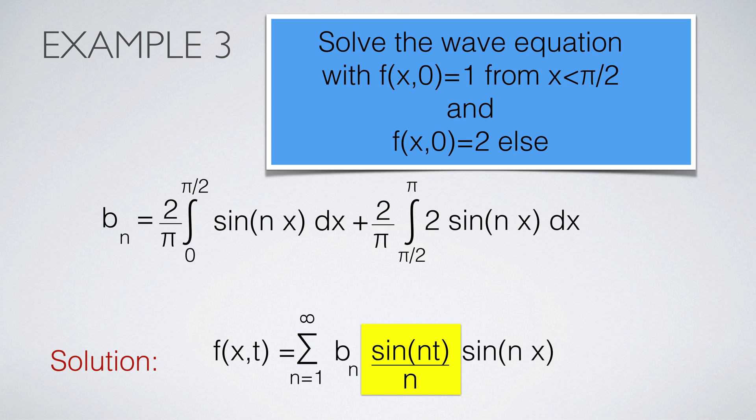In example 3, we give the initial velocity. We again have to build the Fourier series and then add the factor sine nt over n. This example computes the motion of the string if it has been hit by a hammer on the left-hand side of the string.